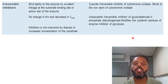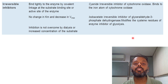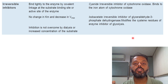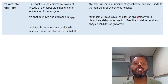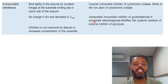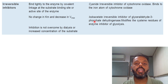An example of irreversible enzyme inhibition is cyanide. Cyanide can inhibit cytochrome oxidase, so there will be no functioning of the electron transport chain. Another example of irreversible inhibition is iodoacetate, which is an irreversible inhibitor of glyceraldehyde-3-phosphate dehydrogenase.